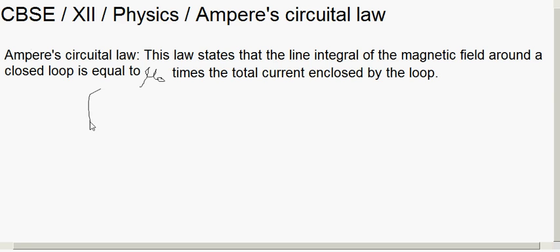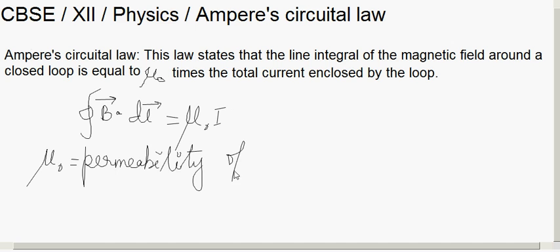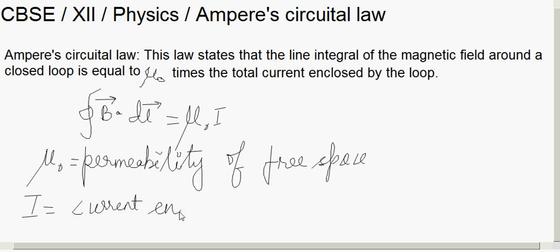Mathematically, the line integral of B dot dL equals mu-naught times I, where mu-naught is the permeability of free space and I is the total current enclosed by the loop.